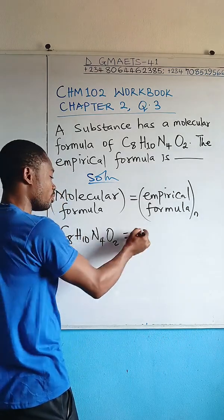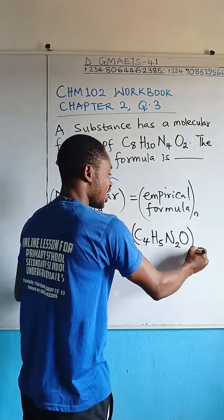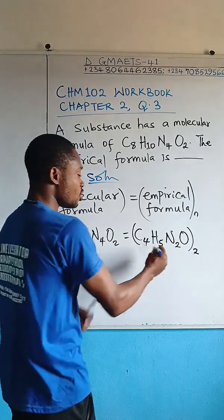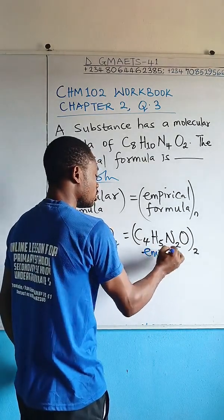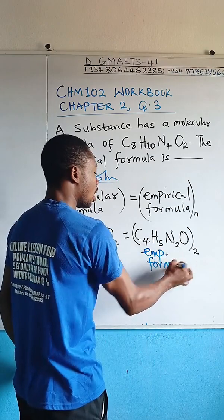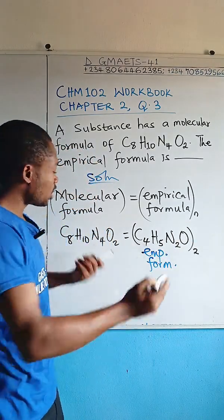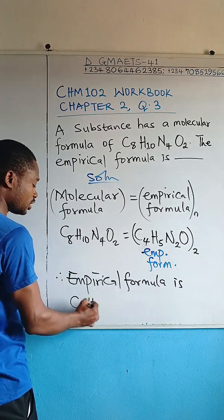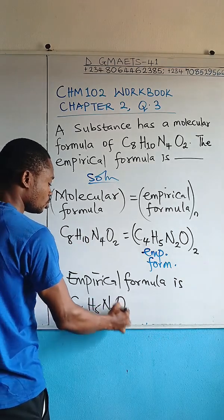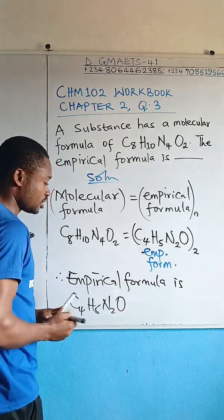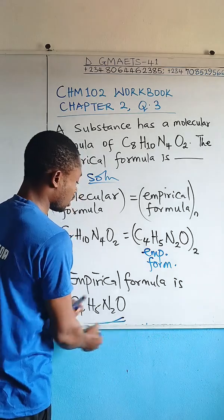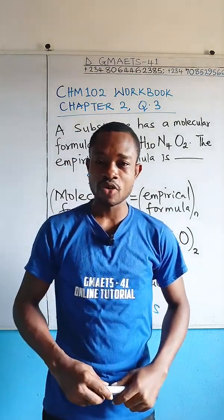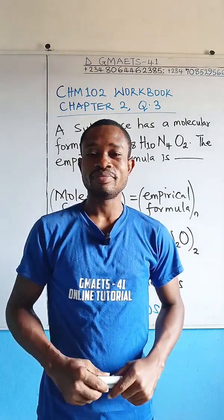Pulling out two from the atomicities gives us n = 2. The term left after factoring is your empirical formula. Therefore, the empirical formula is C4H5N2O — this is the empirical formula corresponding to the given molecular formula C8H10N4O2. I hope you've learned something from this short lecture video.